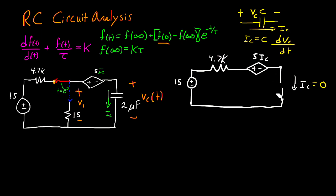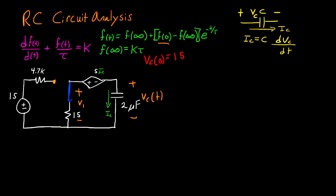In steady state the current through the capacitor becomes zero, so the capacitor behaves as an open circuit. Since ic equals zero, five times ic is also zero, so the dependent source can be replaced with a wire. With no current through the resistor, there's no potential difference across it, meaning the capacitor sees 15 volts. So vc of zero equals 15. Now we analyze the circuit after the switch moves to the second position, focusing on just the part of the circuit that affects v1 and vc.